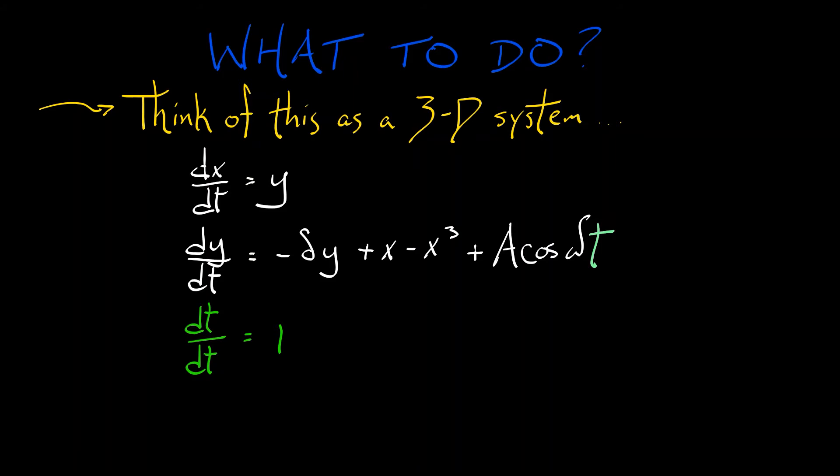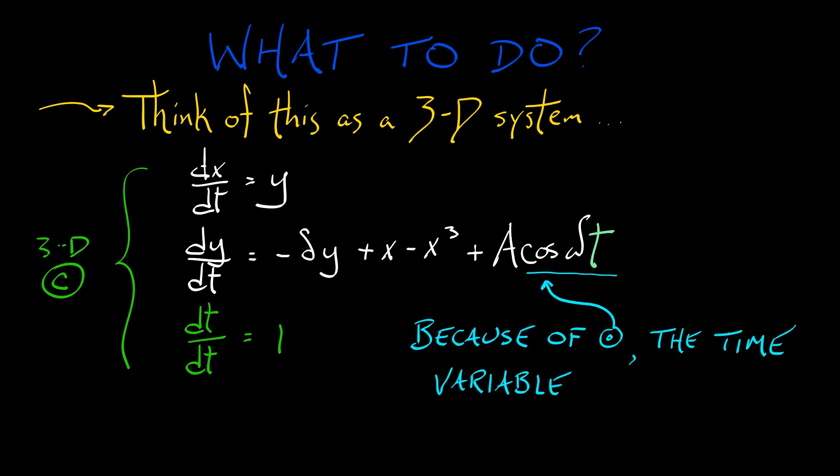Now, this does create for us a three-dimensional continuous time system. Because of the sinusoidal nature of that forcing, the time variable, t, can be thought of as a circular variable, as a variable in the circle, s1. So, we really have dynamics on the plane, r2, x and y, times the circle, s1. Very interesting.